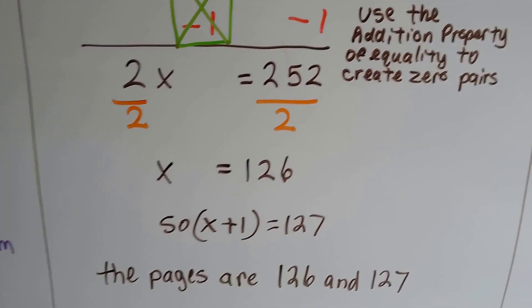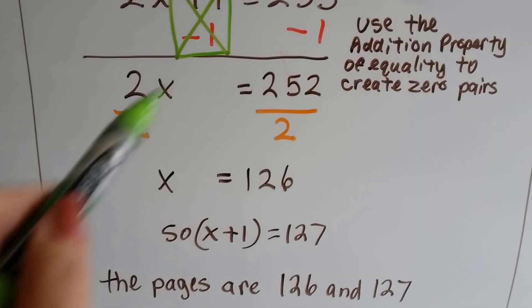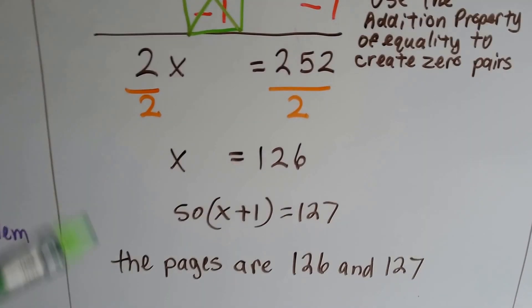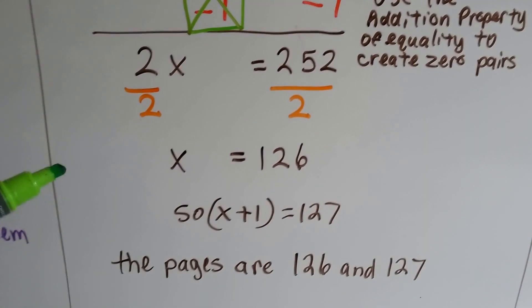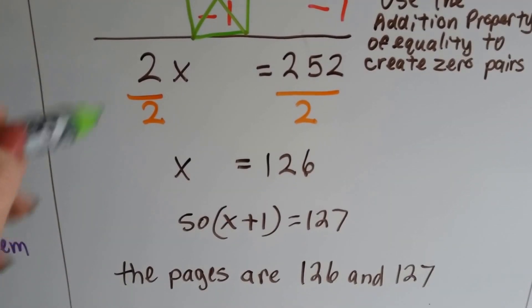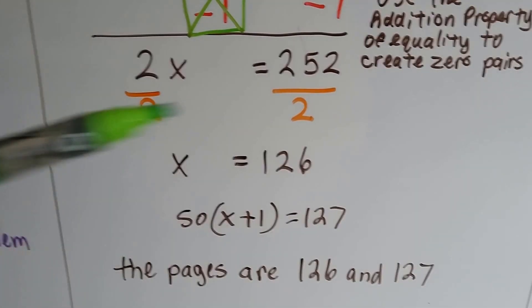Now we could use the multiplication property of equality and multiply both sides by the reciprocal of this coefficient 2. Or we can do it this way that I'm going to do the quicker way and just divide both sides by the coefficient 2. Because we don't have any fractions in here. And that's when we would normally want to use that multiplication property of equality because it creates a fraction, that reciprocal. So this is quicker.